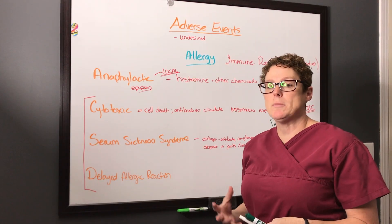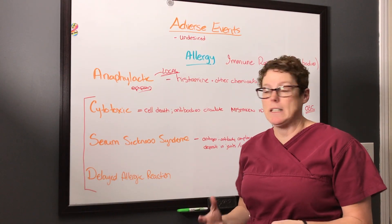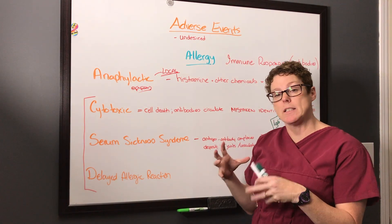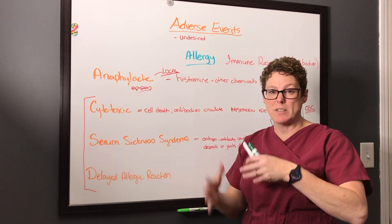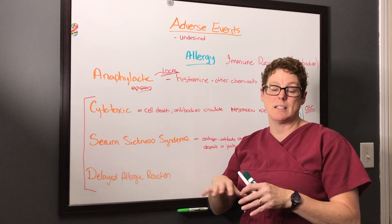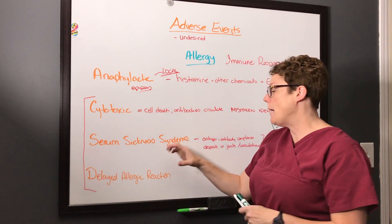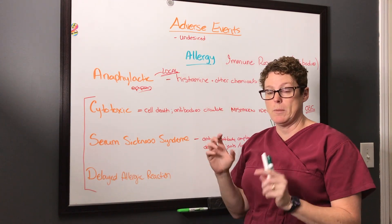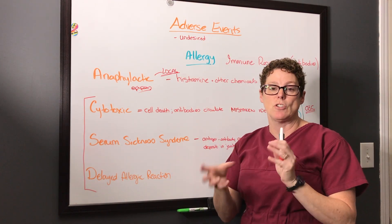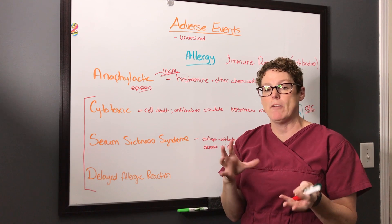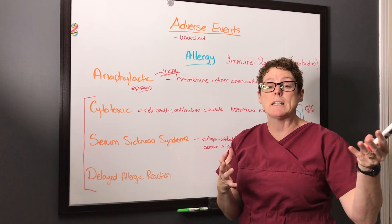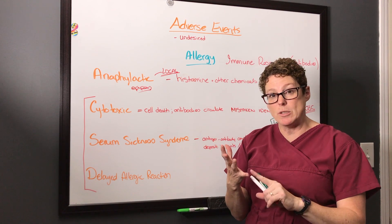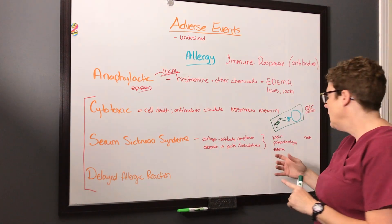When the immune system is overrun and antigen-antibody complexes cannot be cleared effectively, they clump together in serum sickness syndrome and deposit in the vasculature and joints of patients. As a result, days to weeks later a patient may present with polyarthralgia — multiple joints that are painful and swollen.